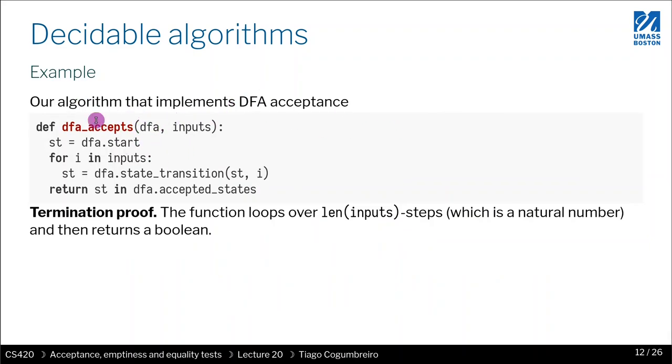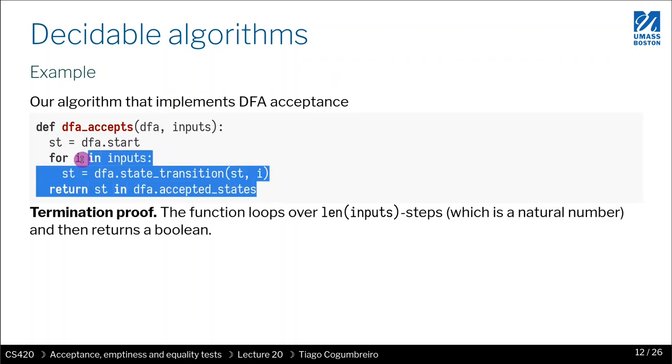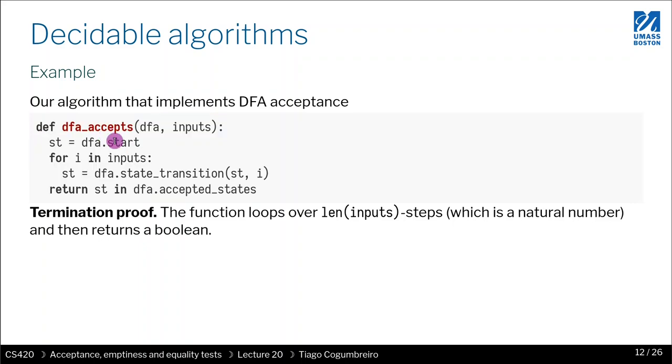Let me give you an example of an algorithm to make it more concrete. This algorithm that I'm highlighting in blue represents the implementation of the acceptance algorithm. If you have a DFA and you have a sequence - a word - inputs correspond to a word. If a word is a string in Python, you can iterate over all characters. A very easy implementation of knowing whether or not a DFA accepts a given input is you define a variable st that is initialized with the start state.